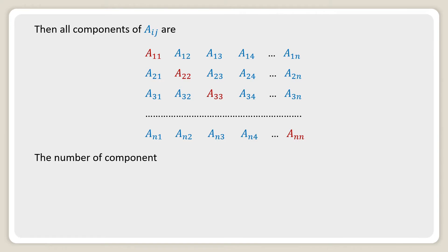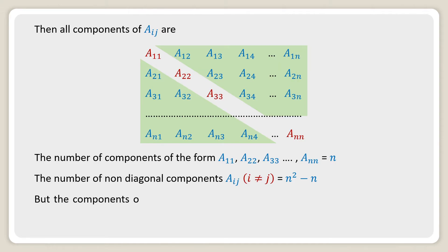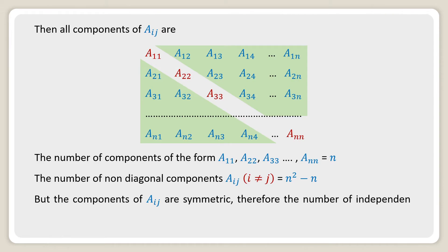The number of diagonal components of the form a₁₁, a₂₂, a₃₃ up to aₙₙ is n. The number of non-diagonal components where i ≠ j is n² − n. Since the components of a_ij are symmetric, the number of independent non-diagonal components where i ≠ j is reduced to half of n² − n.